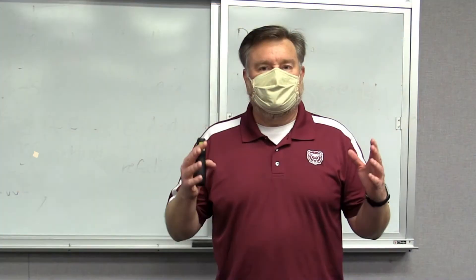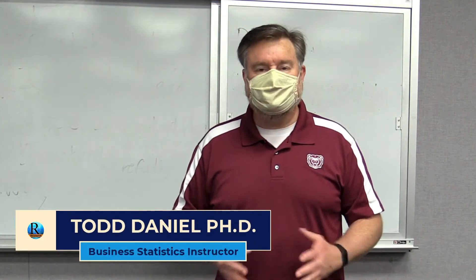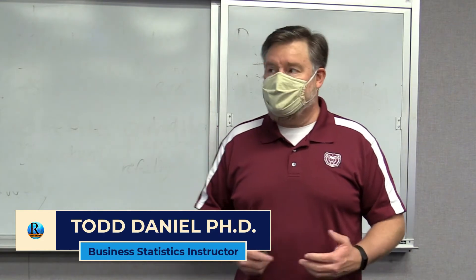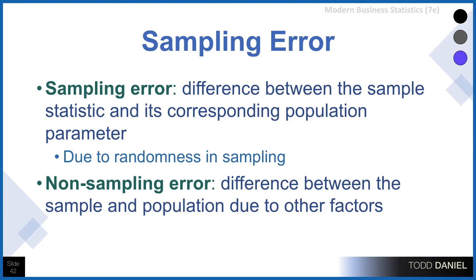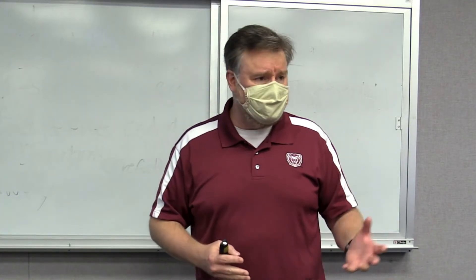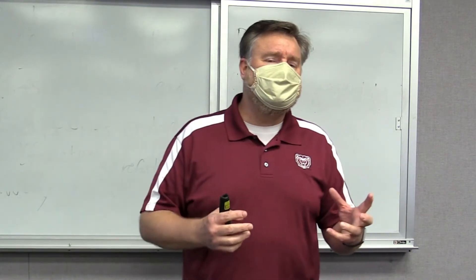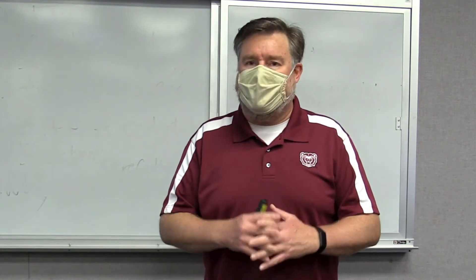As we wrap up our discussion of sampling methodologies, the last thing we need to talk about is sampling error. Sampling error is the difference between a sample statistic and its corresponding population parameter. This occurs when we randomly select 30 individuals, calculate the proportion or the mean, and then find that our estimate was off slightly from the actual population value. That's the occurrence of randomness in our sampling.